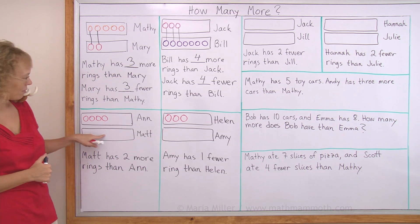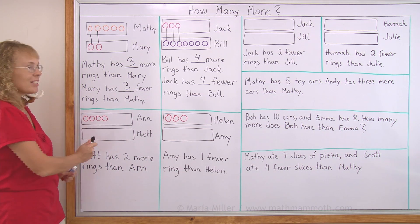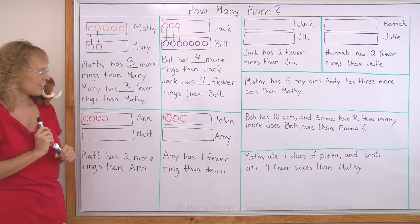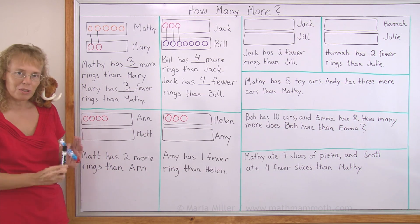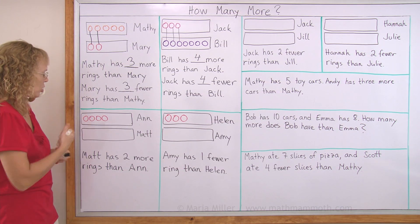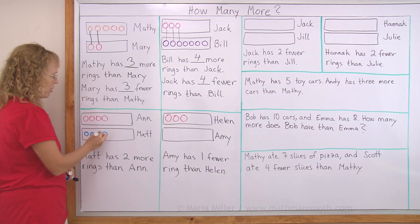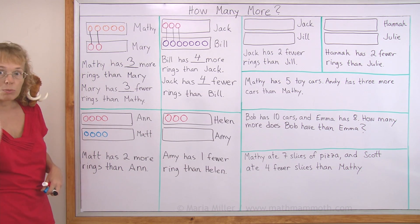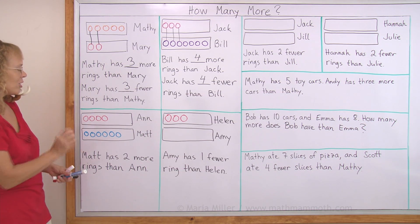Over here, we need to draw the rings for Matt. It says Matt has two more rings than Anne. Think first — who has more rings, Anne or Matt? Matt has two more rings than Anne, so Matt has more rings. First, I will draw for Matt the same amount of rings as Anne: four and four. But Matt has two more, so I draw two more rings for Matt. Matt got six rings.